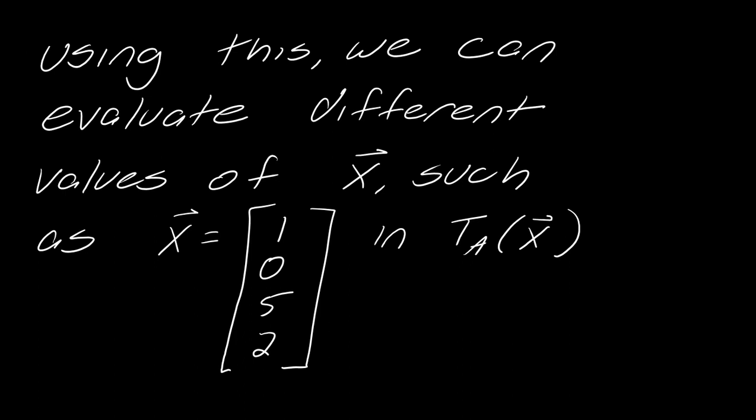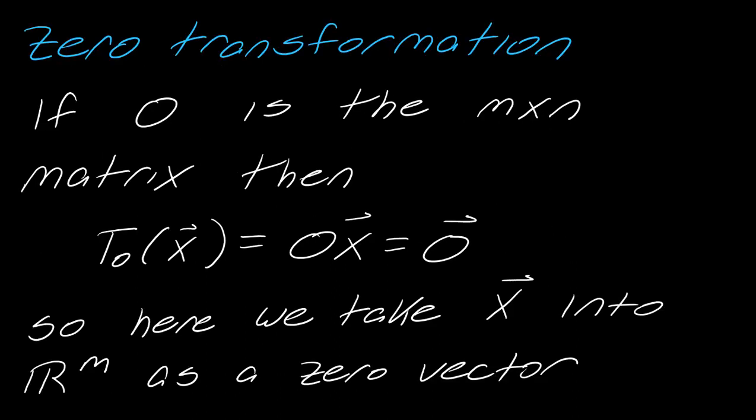And there are two other transformations that I want to just state are standard that I want to throw out before I end this video. So the first is a zero transformation. So this would just be an n by n matrix of zeros. And so we would denote it as this T sub zero of X. And so this is really just zero times X. This will just end up being a zero vector. So this takes our vector X from Rm into Rm as a zero vector. So just an M size vector of zeros.